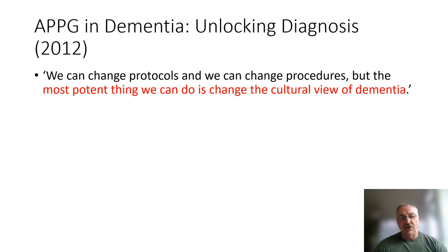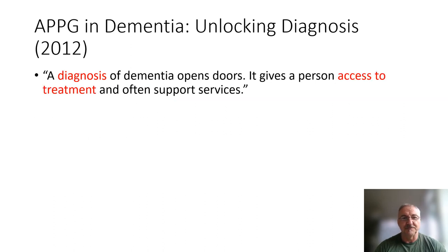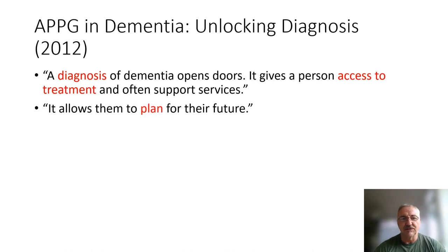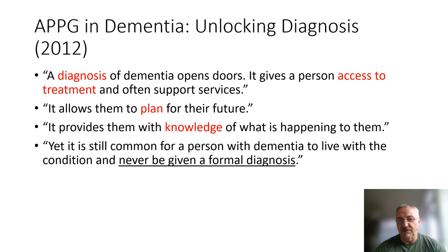This is a quote from the All-Party Parliamentary Group on Dementia, who produced a report ten years ago on unlocking the diagnosis. This is important because oral evidence was given by me. It says that what we need to do is change the cultural view of dementia, and ten years later that struggle remains. The report says diagnosis was important because it opens doors and gives people access to treatment and support services, allows them to plan for the future, and provides knowledge of what is happening to them. But it's still sad that it is common for people to die with this fatal brain disease and never be given a formal diagnosis.